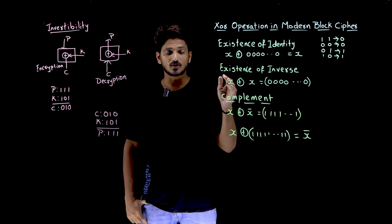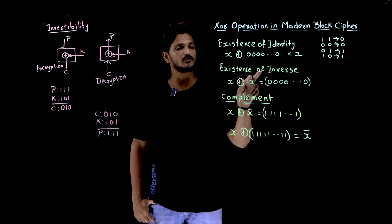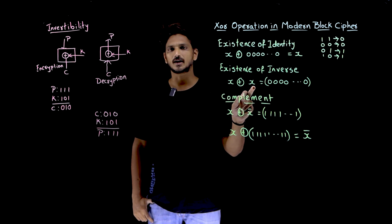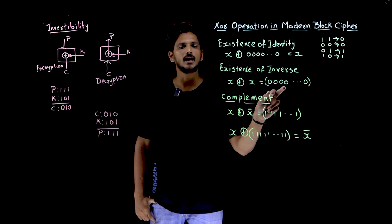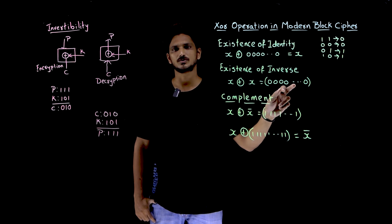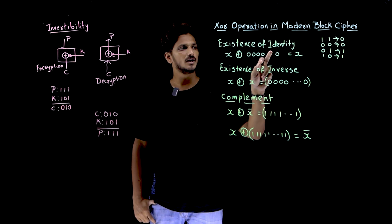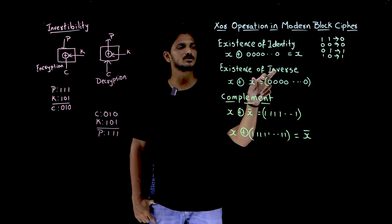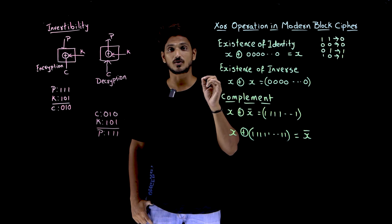Similarly, XOR operation is going to have existence of inverse element. X XOR of X, you are going to get same 0, 0, 0, 0, 0, which means identity element. So that is why existence of inverse for XOR operation.